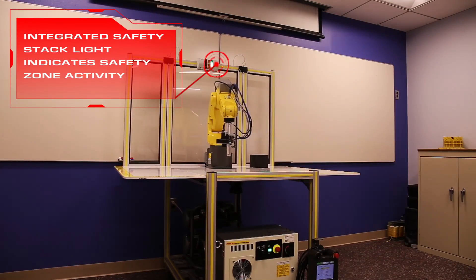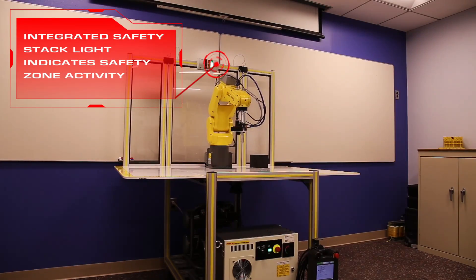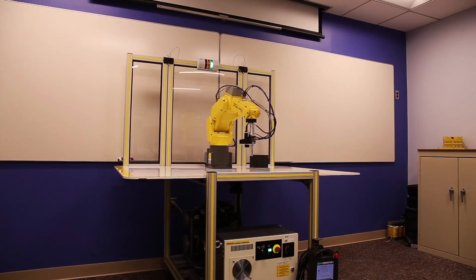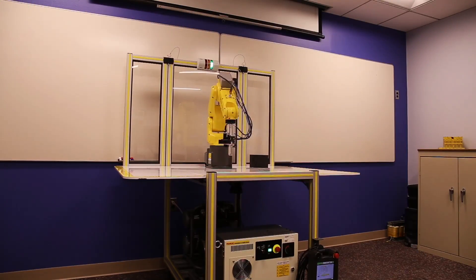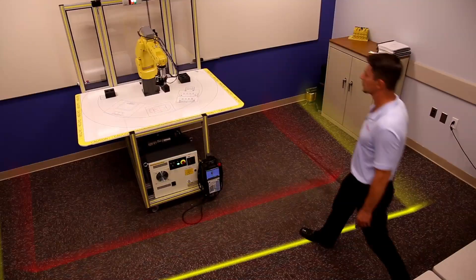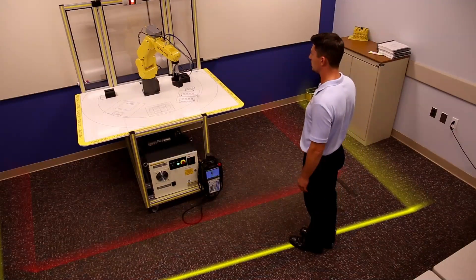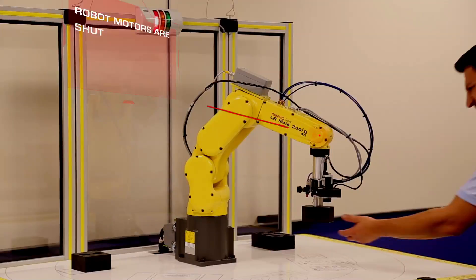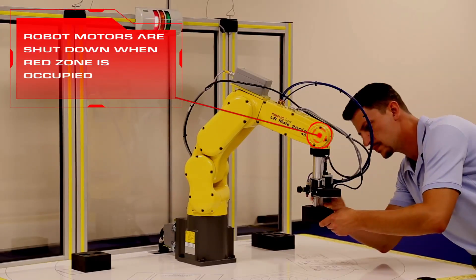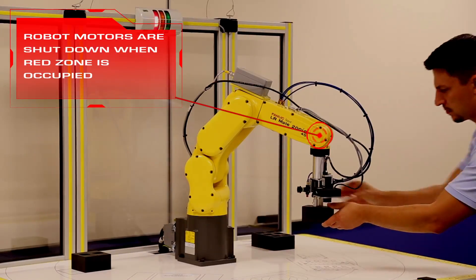An integrated safety stack light indicates zone activity. The robot's servo motors slow down as the operator approaches and the robot comes to a complete stop when the red zone is occupied.